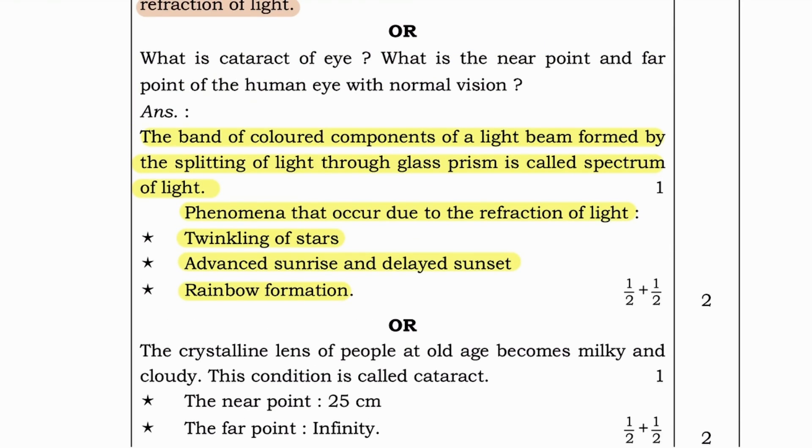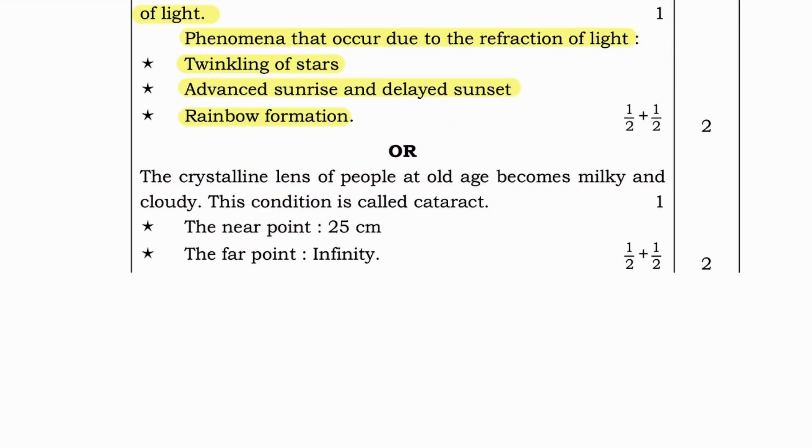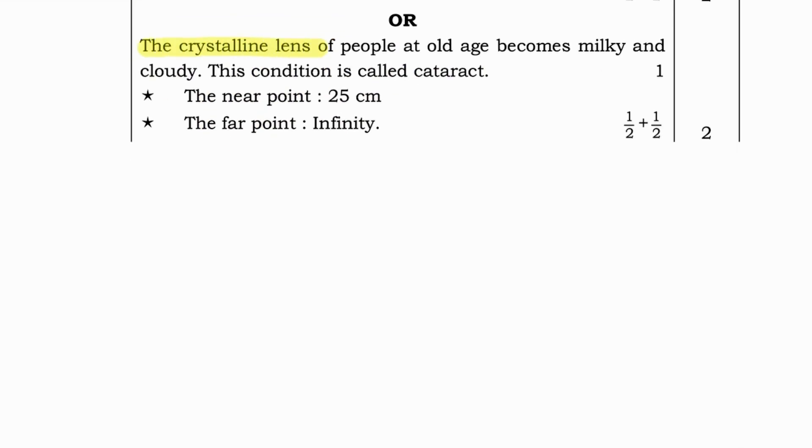Optional question is. What is cataract of eye? What is the near point and far point of the human eye with normal vision? And answer is. The crystalline lens of people at old age becomes milky and cloudy. This condition is called cataract. The near point is 25 cm and the far point is infinity.